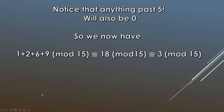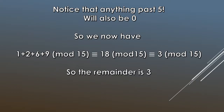So we only need to sum the non-zero contributions: 1 + 2 + 6 + 9 = 18. Then 18 mod 15 = 3. So the remainder is 3. That's a typical exam question worth around three or four marks.